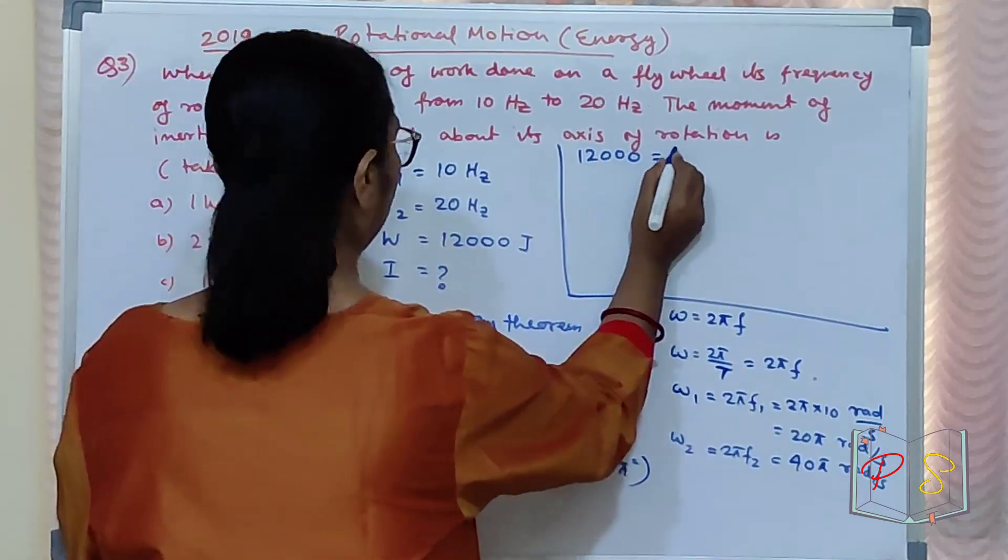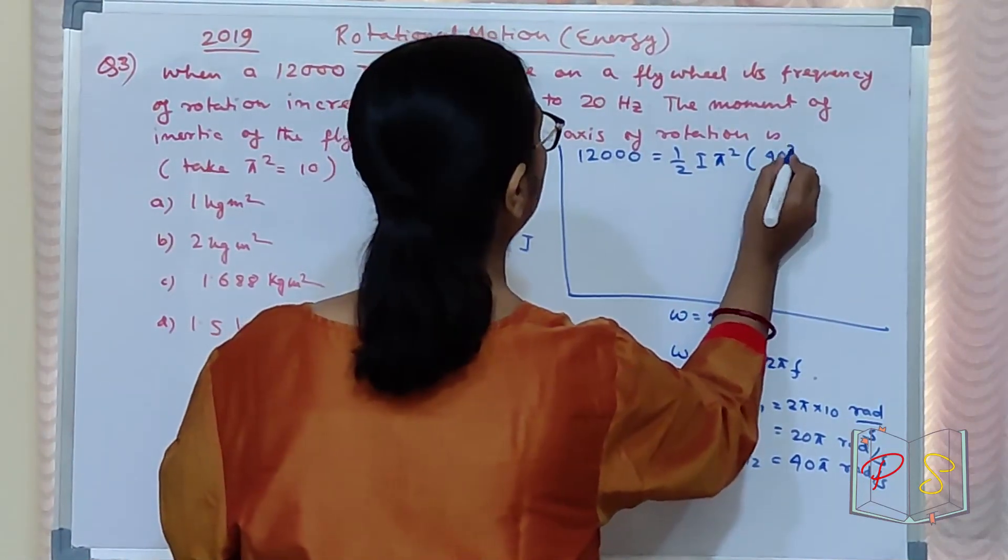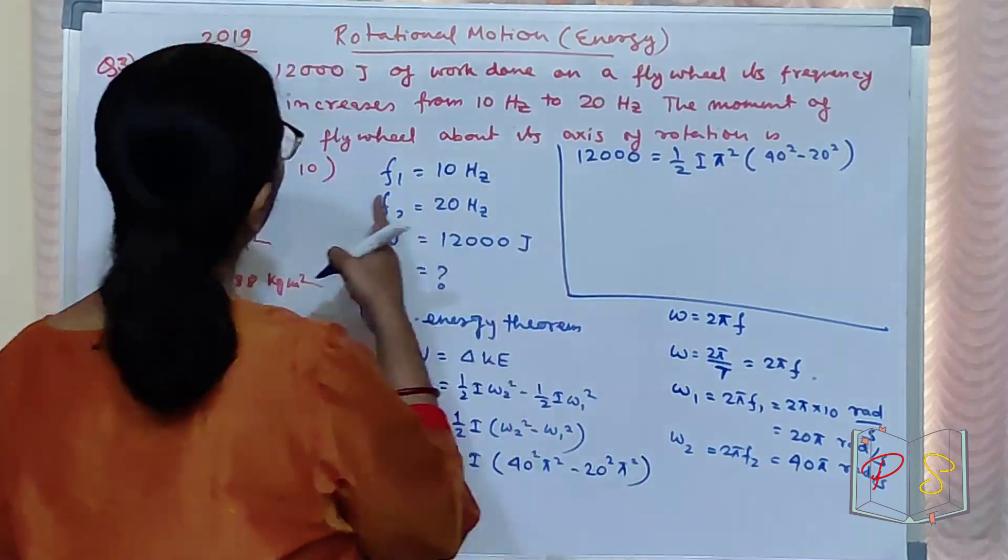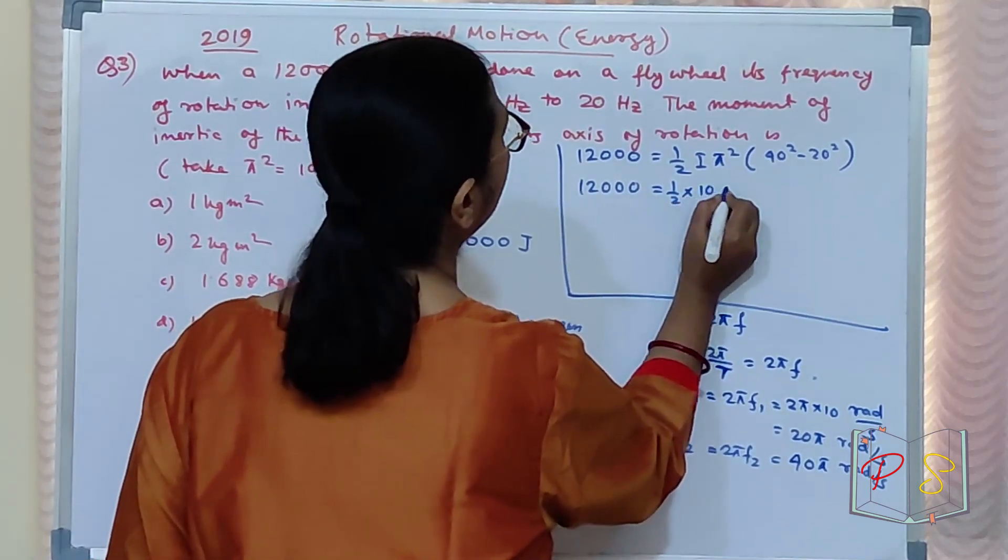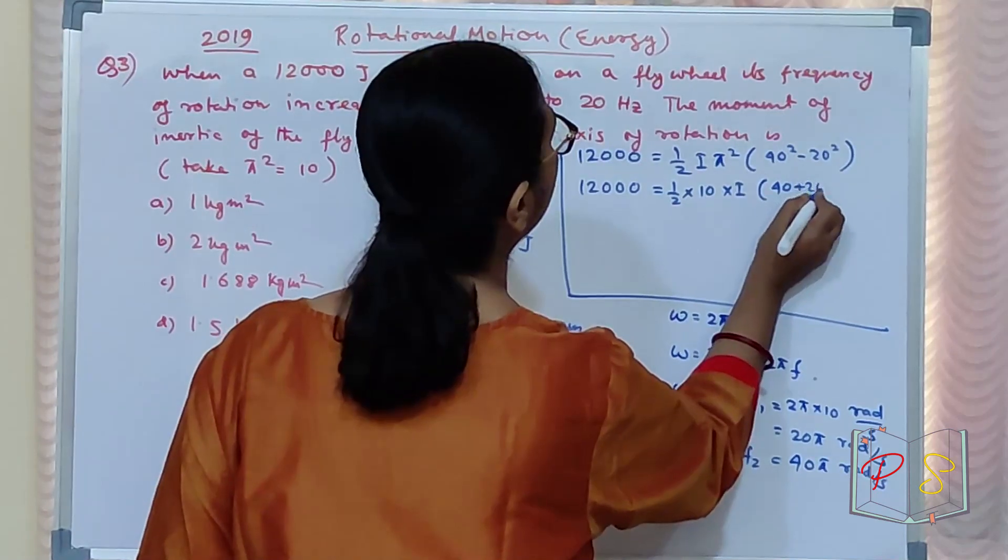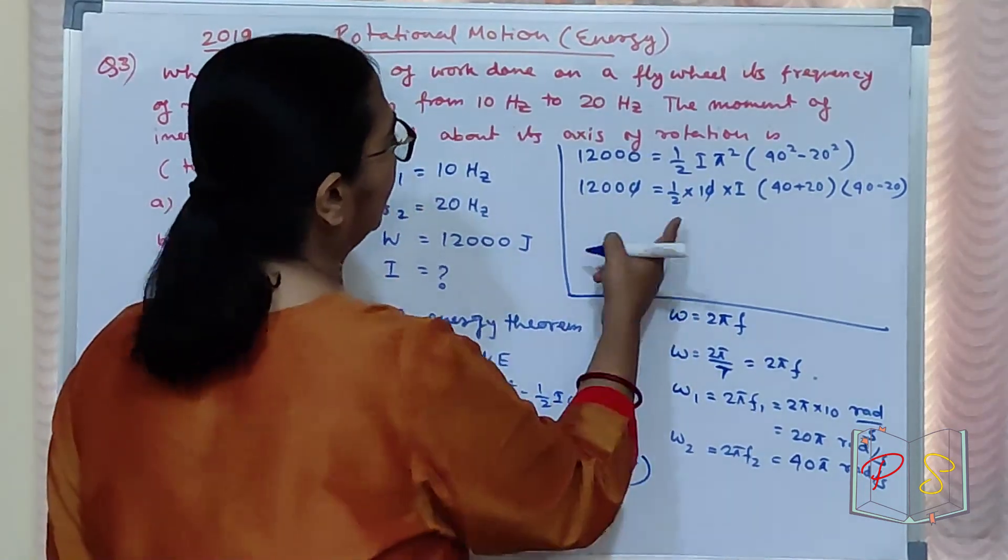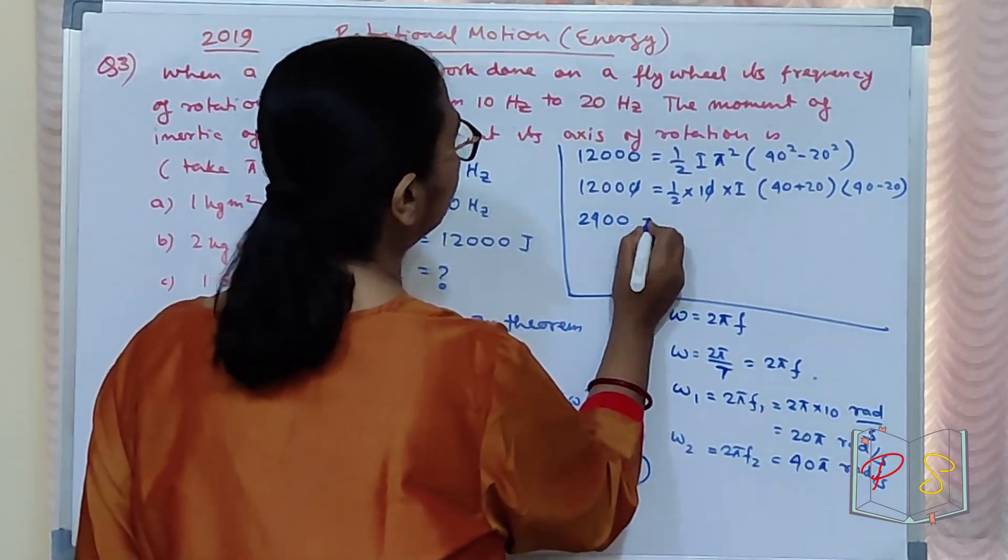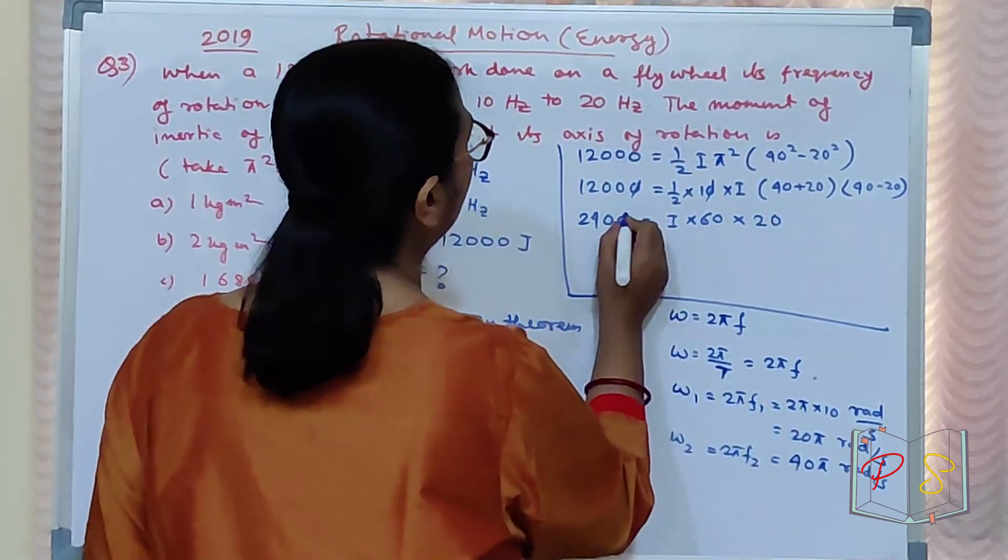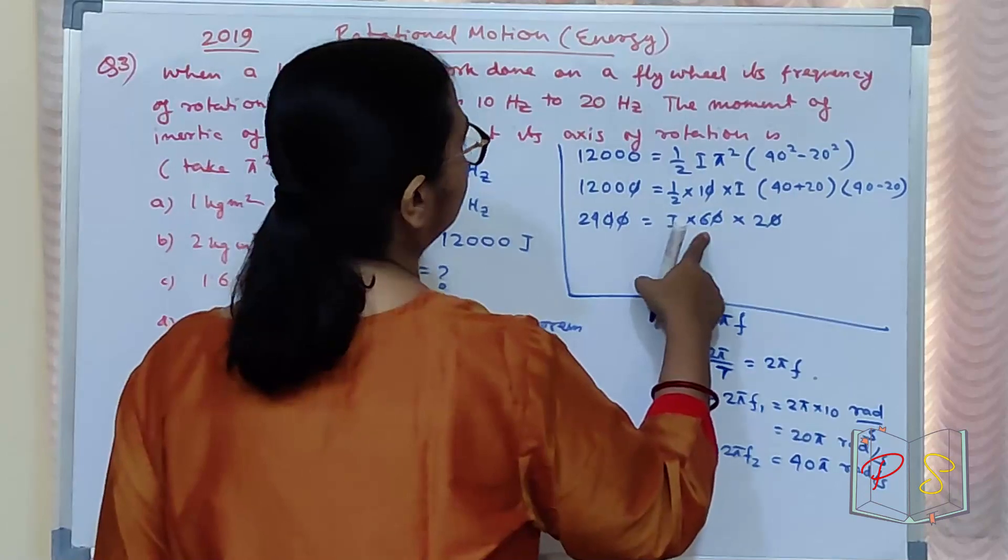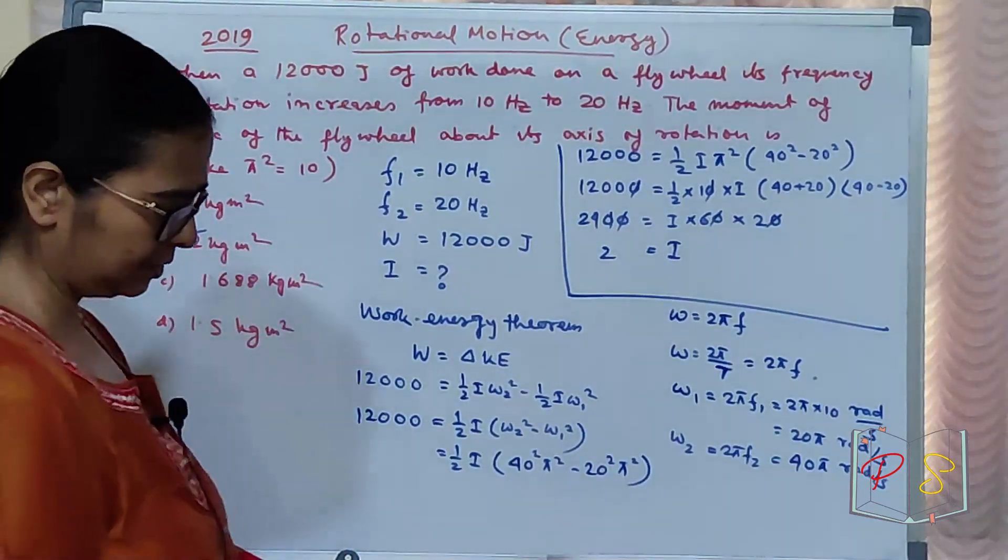So, 12000 equal to half of I of pi square common lelo. Pi square common ho gaya. Toh 40 square minus 20 square. Pi square ka value de diya. 10. So, 12000 equal to half of 10 of I of isko kya karo? 40 plus 20 into 40 minus 20. X square X square nikal gaya. Aa gaya 24000 equal to I into 60 into 20. Bara bara 24. 2 equal to I. I equal to 2 kg per meter square mila.